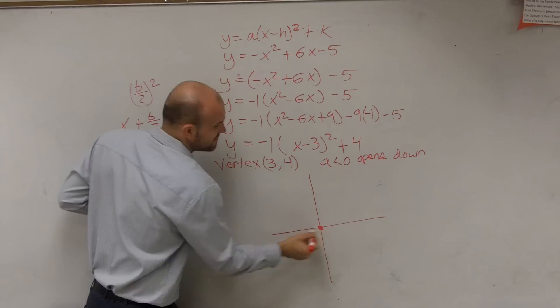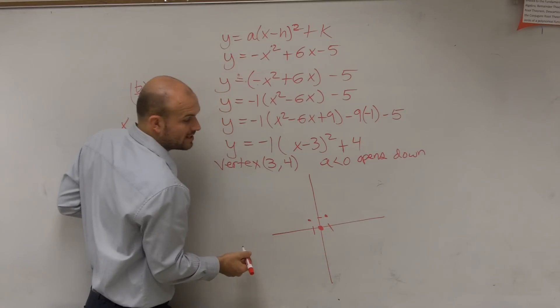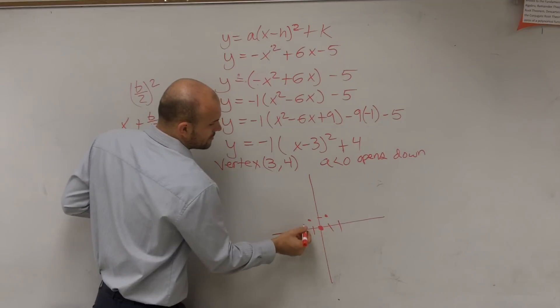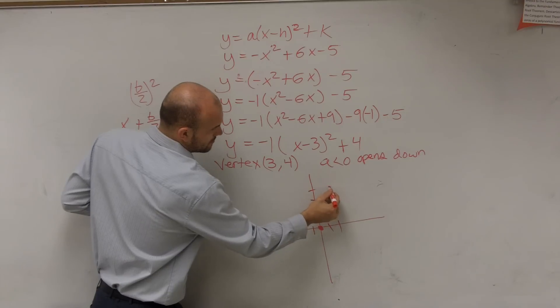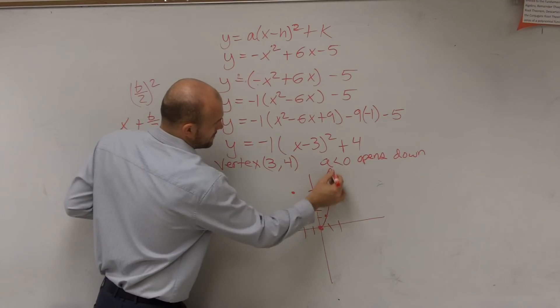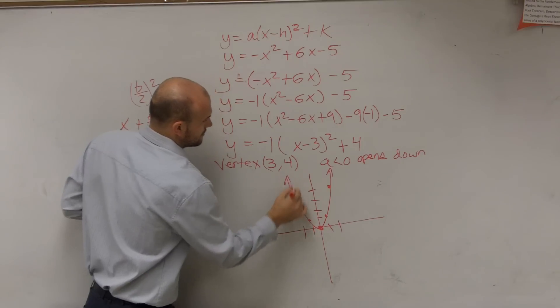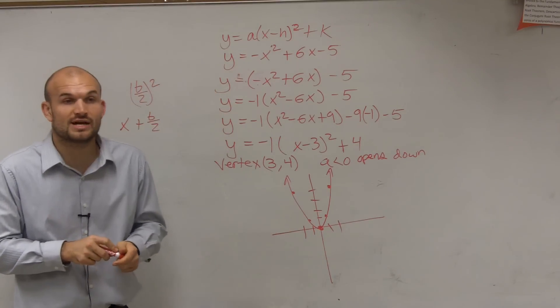My parent graph has a vertex at 0, 0. It contains the point 1, 1 and negative 1, 1. Contains the point negative 2, 4 and 2, 4. Alright? However, that's what we call the parent graph. That's with no transformations.